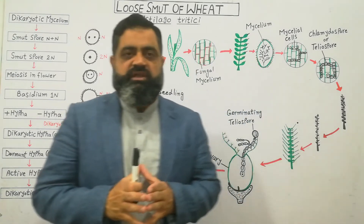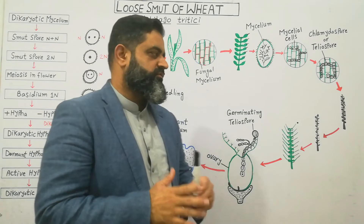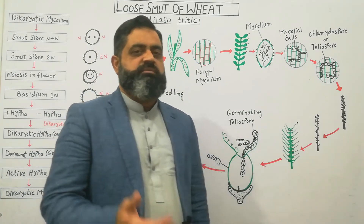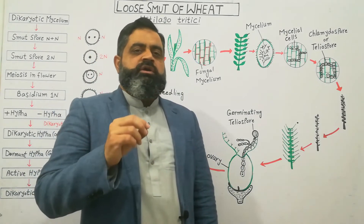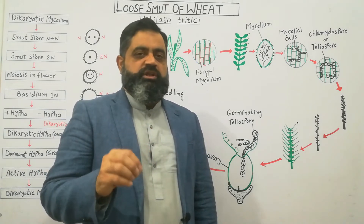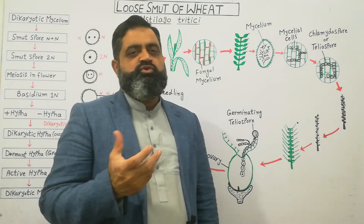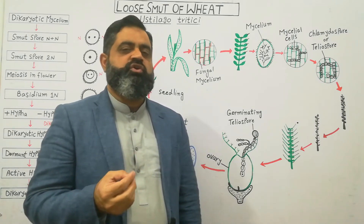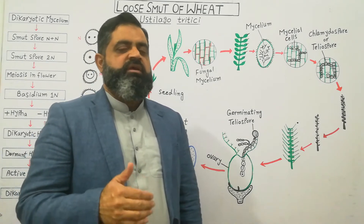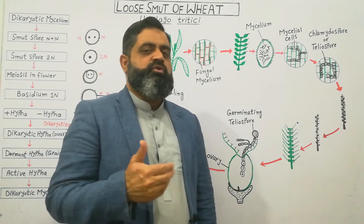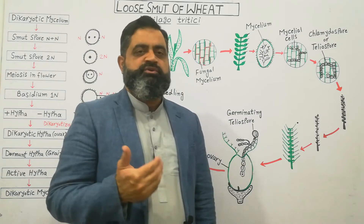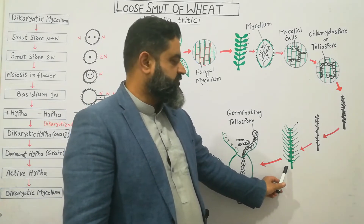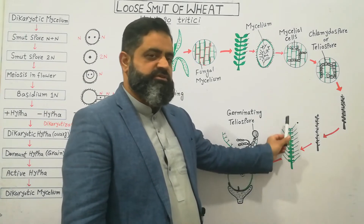Let's start this cycle with a flower or ears of wheat. A farmer sows seeds in the soil, and usually wheat is sown in the winter season in the months of November and December. When the plant grows to a certain height they produce flowers, so in the months of March and April the wheat crop produces flowers.